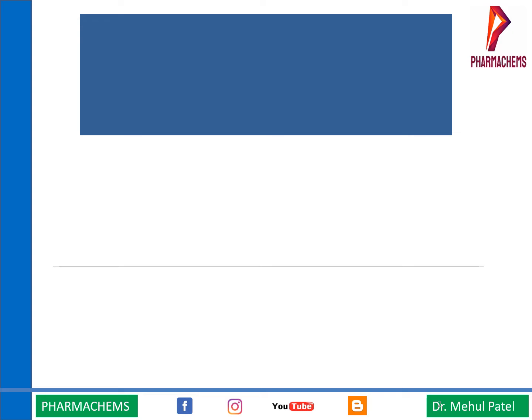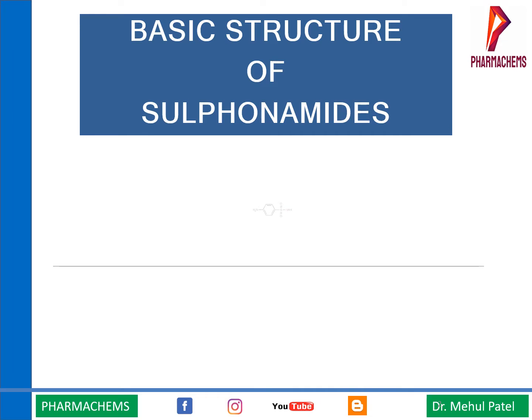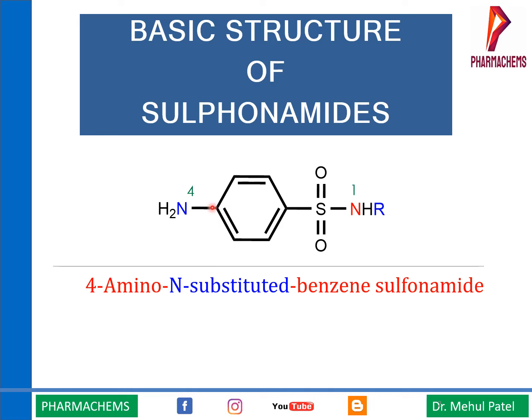As you know, sulfonamide is an important antibacterial derivative. To understand the structural activity relationship, we will first start with understanding the basic structure of sulfonamide. In the basic structure, you can see there is an aromatic ring, an amino group, and a sulfonamide group — also called the sulfamido group.